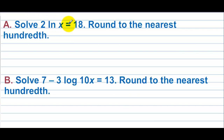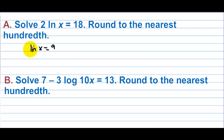Solve 2 natural log of x equals 18, round to the nearest hundredth. Let's divide both sides by 2. We have the natural log of x equals 9. Then we need to go from log form to exponential form. This is base e, so x must equal e to the 9th.